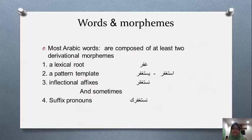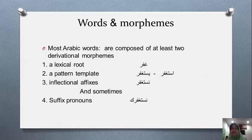Most Arabic words are composed of at least two derivational morphemes: a lexical root and a pattern template. For example, 'ghafara' (to forgive) is a trilateral lexical root. When we add the pattern template of 'istaf'ala' to 'ghafara', it becomes 'istaghfara', which takes on a new meaning — it's still a verb but now means 'to seek forgiveness'.